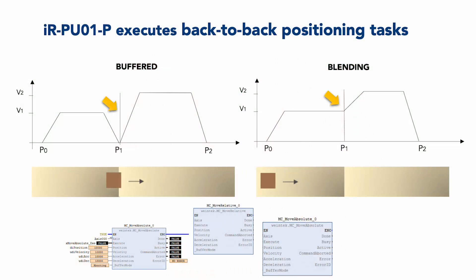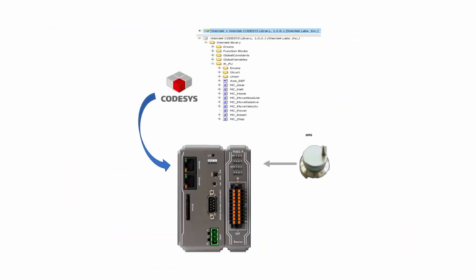It is worth noting that IR-PU-01P can operate positioning controls, even supporting a buffer mode, speed controls, capture, jerk control, and a variety of homing routines.